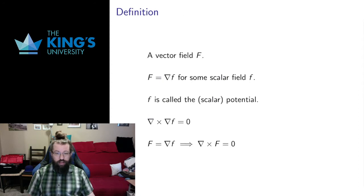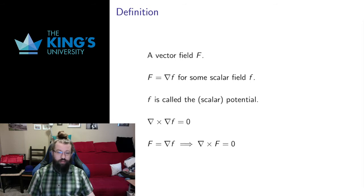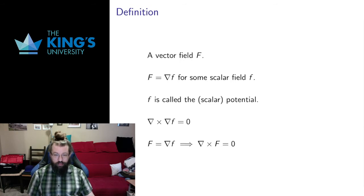A conservative vector field is a vector field F that is the gradient of some scalar field. We already know from previous calculus courses that if we have a scalar field and take its gradient, we get a vector field that indicates the direction of greatest change. That scalar field in this context is going to be called the scalar potential for the vector field, and that word 'potential' should spark notions of potential energy, which it will turn into a potential energy field for force situations, which I'll talk about later in the video. The general definition is that a vector field is conservative if it is the gradient of some scalar field.